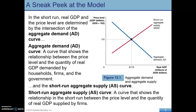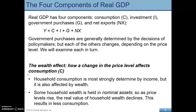Similarly, with short-run aggregate supply, it is upward sloping like you would expect with a supply curve. But again, this is an aggregate — the relationship in the short run between the price level on the y-axis and the quantity of real GDP supplied by firms. One of our key tasks is to understand why the aggregate demand curve slopes downward and what causes it to shift, and then we'll look at the same thing for the aggregate supply curve.